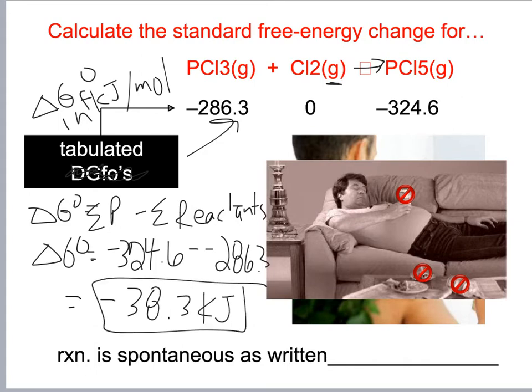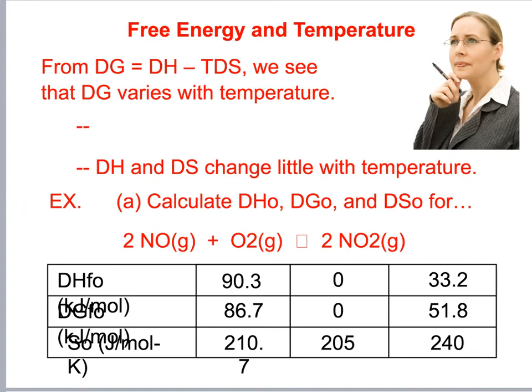This reaction is spontaneous as written left to right because we get a negative value. Now for a larger calculation, delta G equals delta H minus T times delta S, and delta G varies with temperature.